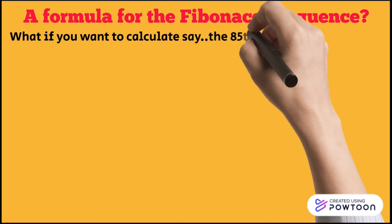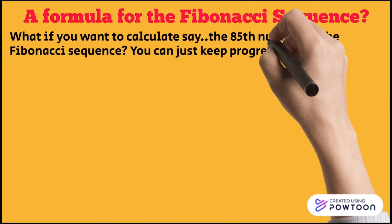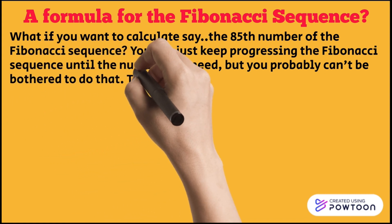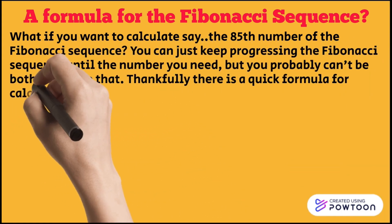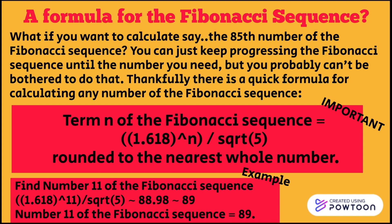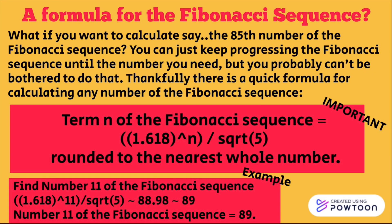What if you want to calculate, say, the 85th number of the Fibonacci sequence? You can just keep progressing the Fibonacci sequence until the number you need, but you probably can't be bothered to do that. Thankfully, there is a quick formula for calculating any number of the Fibonacci sequence. Term n of the Fibonacci sequence is 1.618 to the power of n, all over the square root of 5, rounded to the nearest whole number. For example, if you want to find number 11 of the Fibonacci sequence, we just take 1.618 to the 11th power and divide it by the square root of 5. That gives us about 88.98, which rounds to 89. Therefore, number 11 of the Fibonacci sequence is equal to 89.